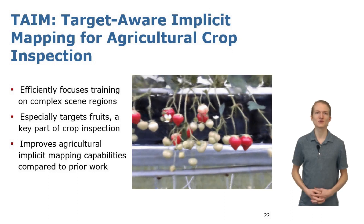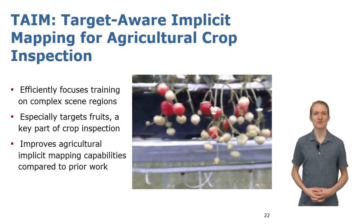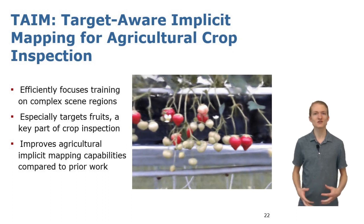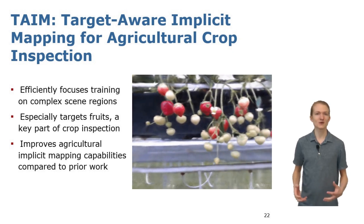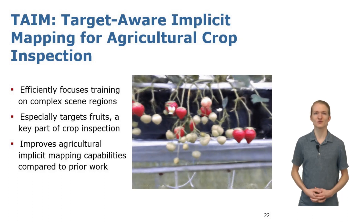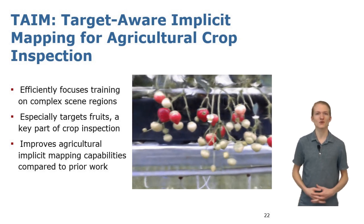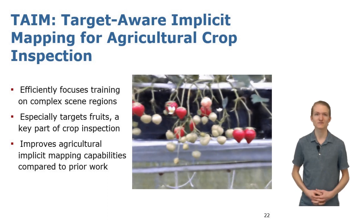In conclusion, we have presented TAME, a target-aware implicit mapping system for agricultural crop inspection, which efficiently focuses training on complex scene regions, especially targets fruits, which are a key part of crop inspection, and improves agricultural implicit mapping capabilities compared to prior works. For more details about our work, please find our paper by following this QR code. Thank you very much for your attention.